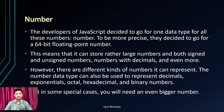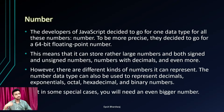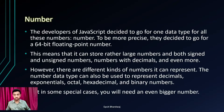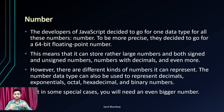Moving on to the next data type: Number. The developers of JavaScript decided to go for one data type for all numbers. To be more precise, JavaScript uses a 64-bit floating point number, which means it can store rather large numbers — both signed and unsigned, numbers with decimals, and more — giving a large range. The Number type can also be used to represent decimals, exponentials, octal, hexadecimal, and binary numbers.